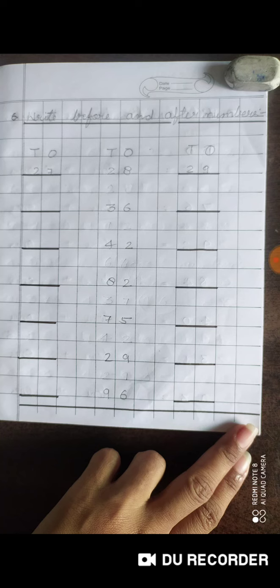Page number 21, number 6: Write before and after numbers. Write before and after numbers. To write it: leave 2 blocks, write the number, leave 2 blocks. I have underlined it. For 28: 27 is the before number and 29 is the after number.